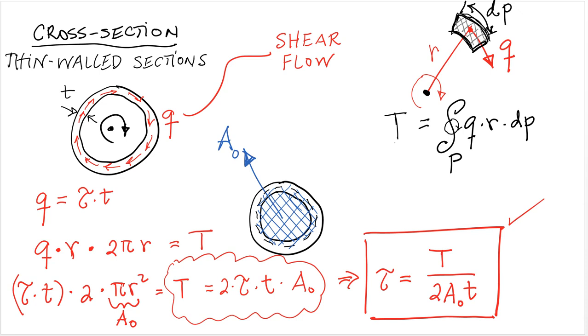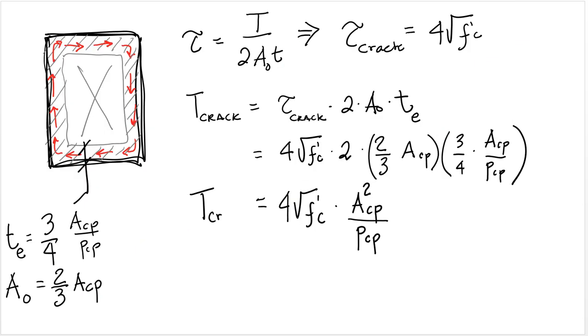How does this relate to the design of reinforced concrete members? Well ACI 318 idealizes the behavior of concrete cross sections as thin walled members. It's an equivalent model that is used or an analogy in order to simplify the calculations.